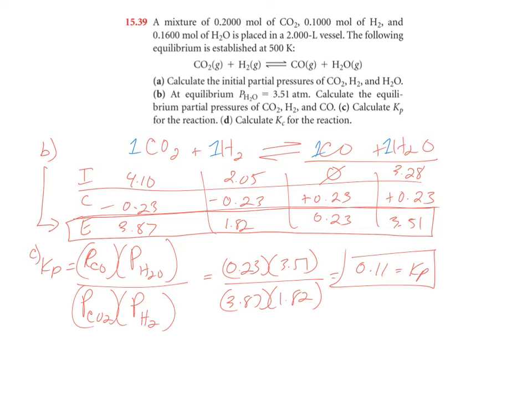Letter D is asking us to find k sub c now for the reaction. Well, k sub c and k sub p are related in this way. The delta N is our change in moles from our balanced chemical equation. Up here, we have one mole of each product, so that's two moles total.